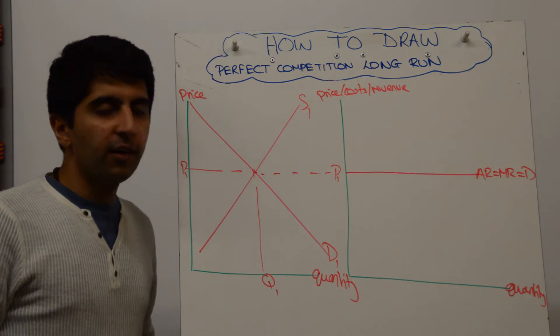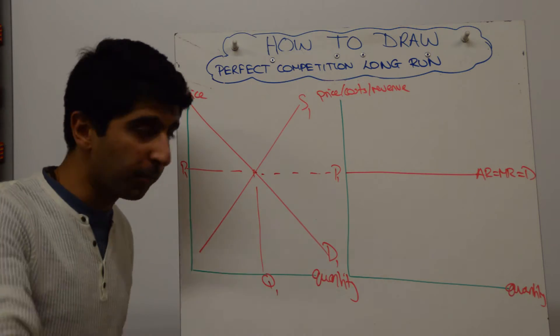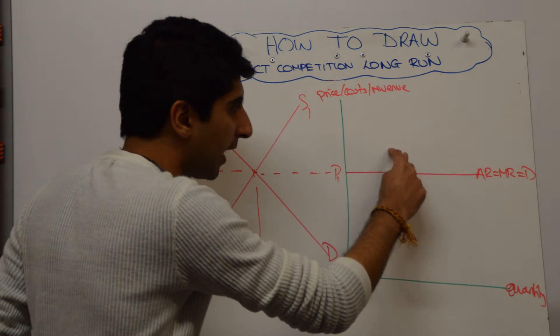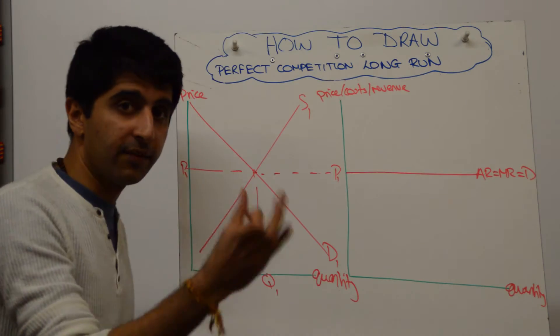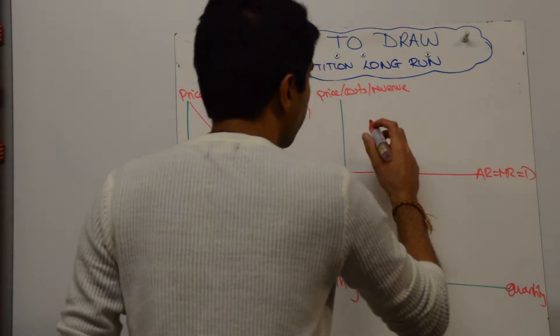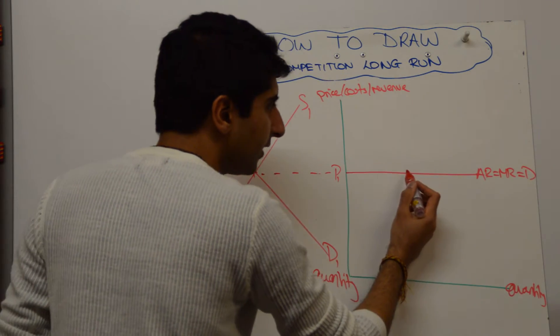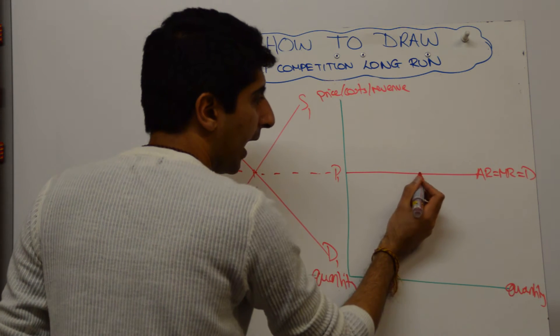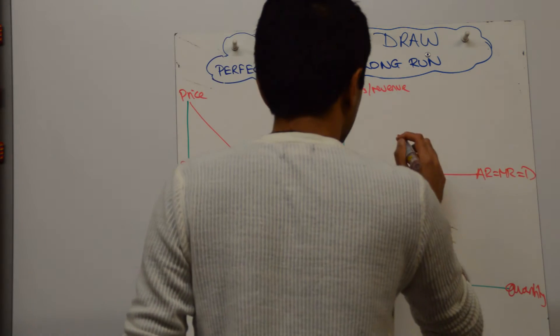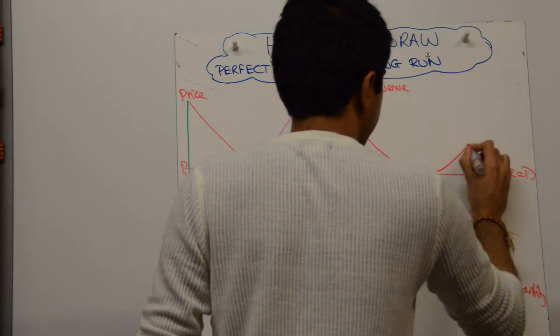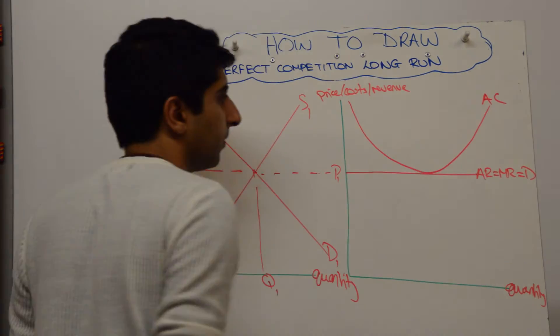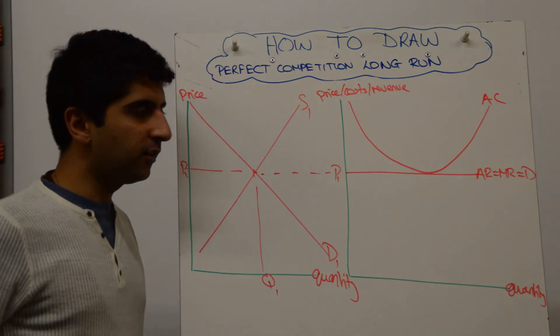Right, you know that in the long run, firms in perfect competition make a normal profit. So AC has got to be tangential to AR, at one given point. So what we need to draw is AC just touching AR at a point on the curve and then going back up again. So something like this will do the job nicely. Not perfect, but pretty good. Yeah, good enough.